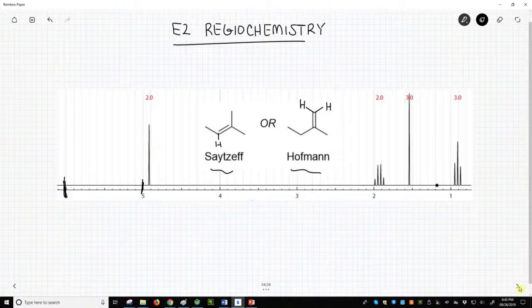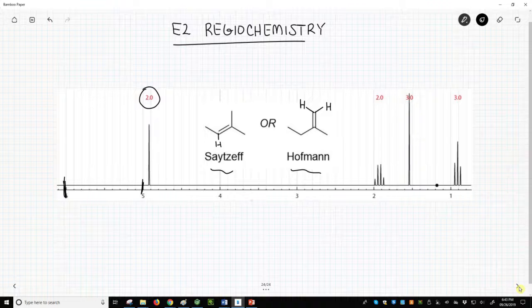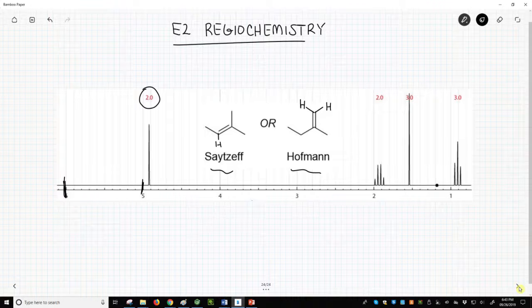Now this peak is a little bit short of 5 ppm, but clearly we have 2 hydrogens in the alkene region.